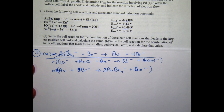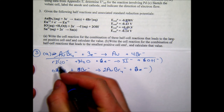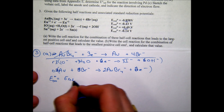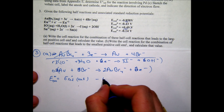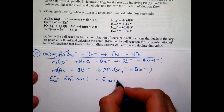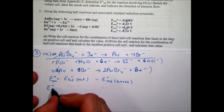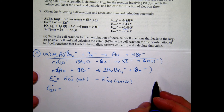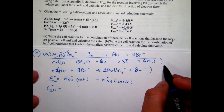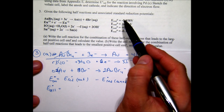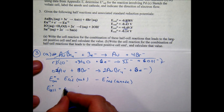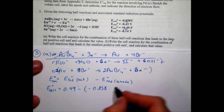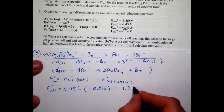Since cell potentials are intrinsic properties, multiplying the equations doesn't change the potential values. E°cell = E°cathode − E°anode = 0.49 − (−0.858) = 1.35 V. That is the largest possible cell potential from these combinations.